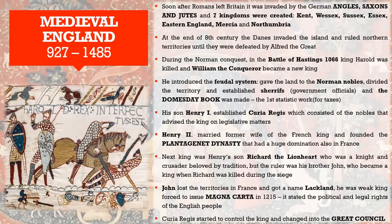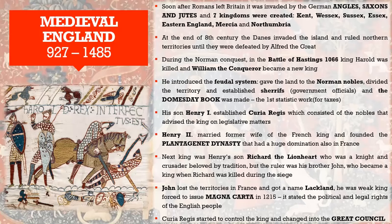After William the Conqueror, the heir to the throne was his son Henry the First, who established the Curia Regis. The Curia Regis was basically the first type of small parliament — a council consisting of nobles who advised the king on legislative matters. So he was not alone in everything; he had officials who were perhaps specialists in specific fields, something like ministers today, though they were chosen by the king, not elected.